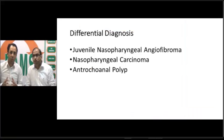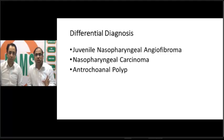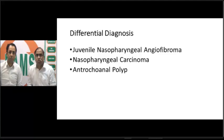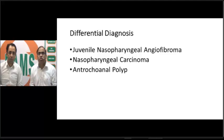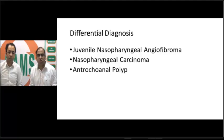Always remember the three basic symptoms of angiofibroma: most commonly epistaxis, followed by nasal obstruction, followed by middle ear symptoms. For differential diagnosis, when we see a reddish mass on posterior rhinoscopy, our first diagnosis should be juvenile nasopharyngeal angiofibroma. The second possibility is nasopharyngeal carcinoma — ideal age is 60-70 years, but it shows bimodal distribution with one peak near age 20. A benign condition to consider is antrochoanal polyp.